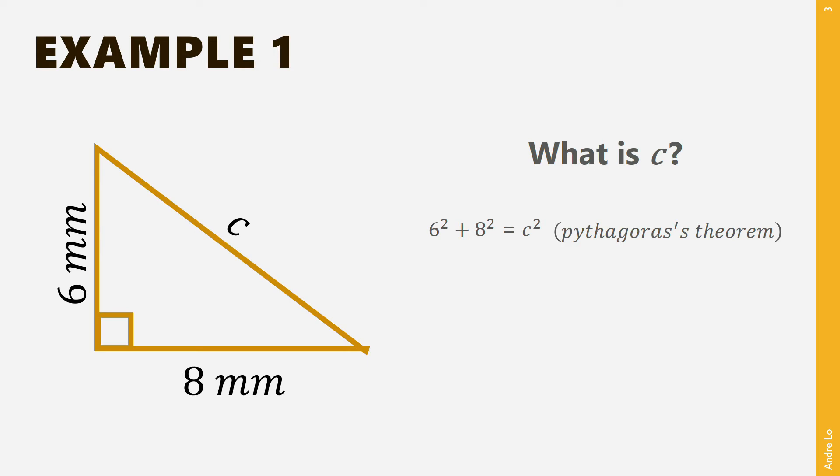Then, solving this, we find that c squared equals 100. Since c is the length and must be positive, we now know that c is 10mm. In other words, we found the length of the hypotenuse as 10mm.